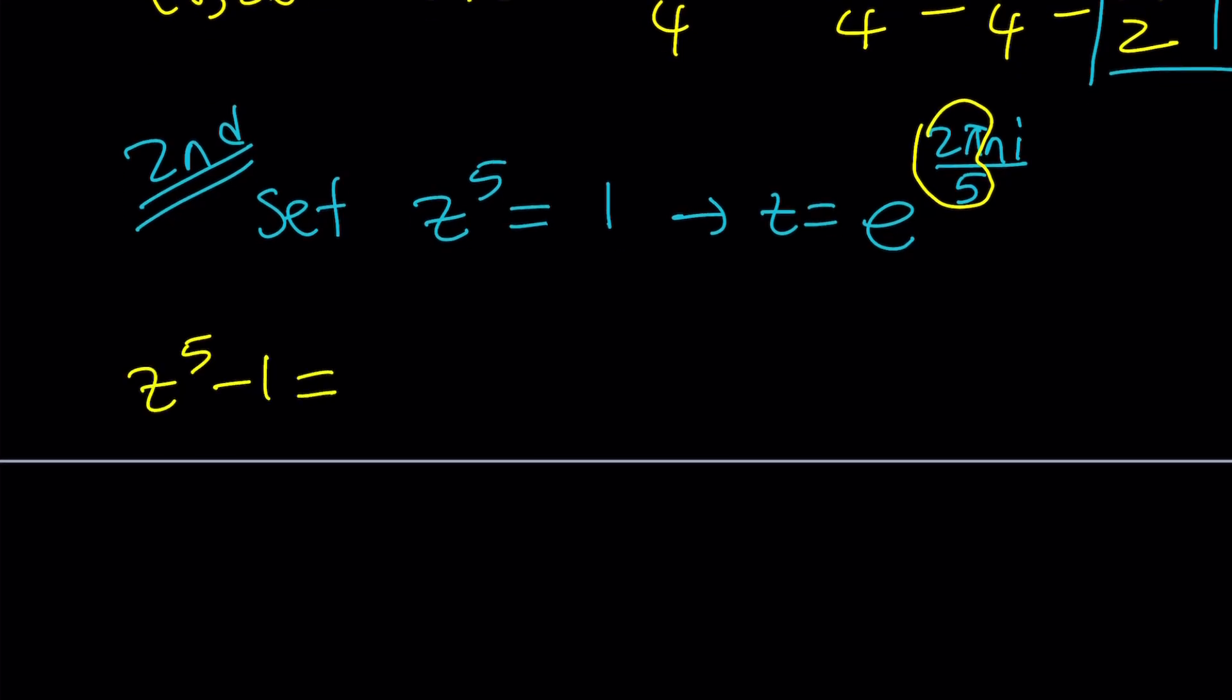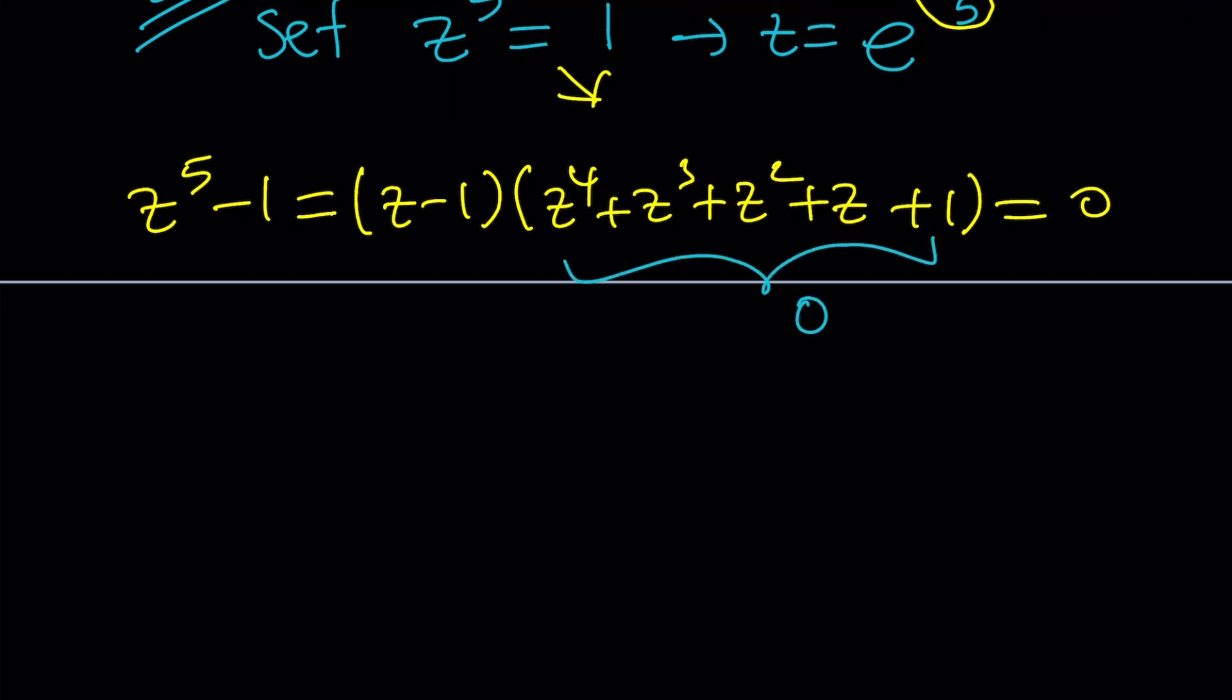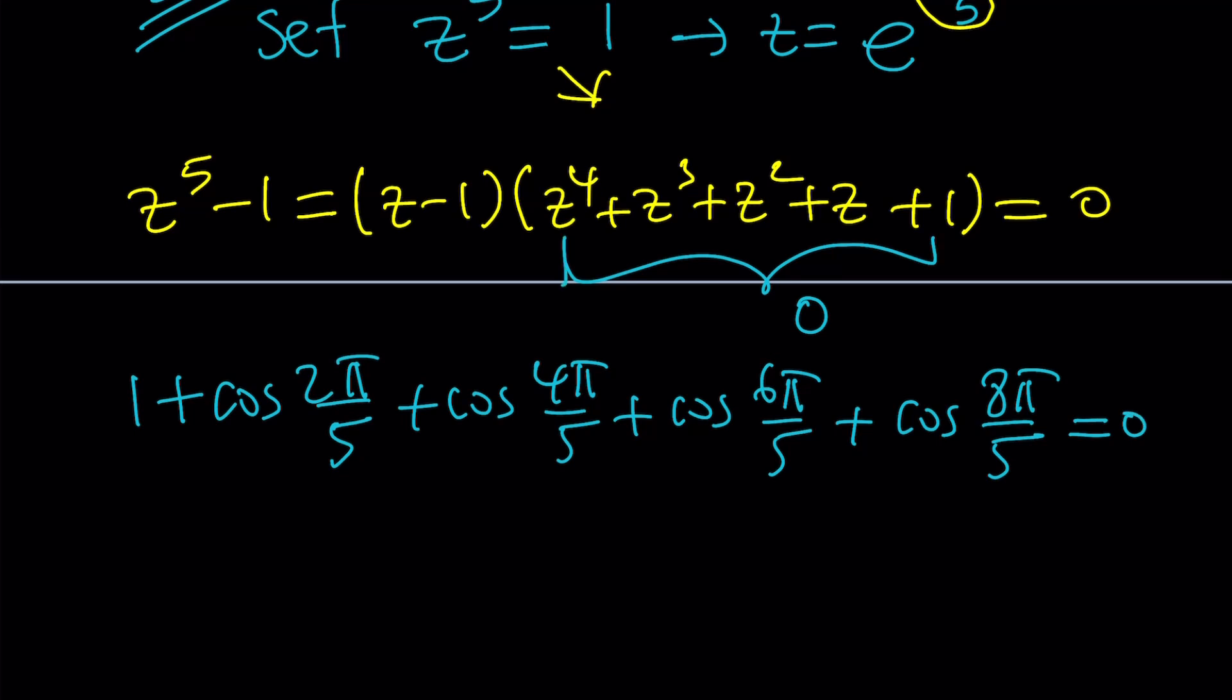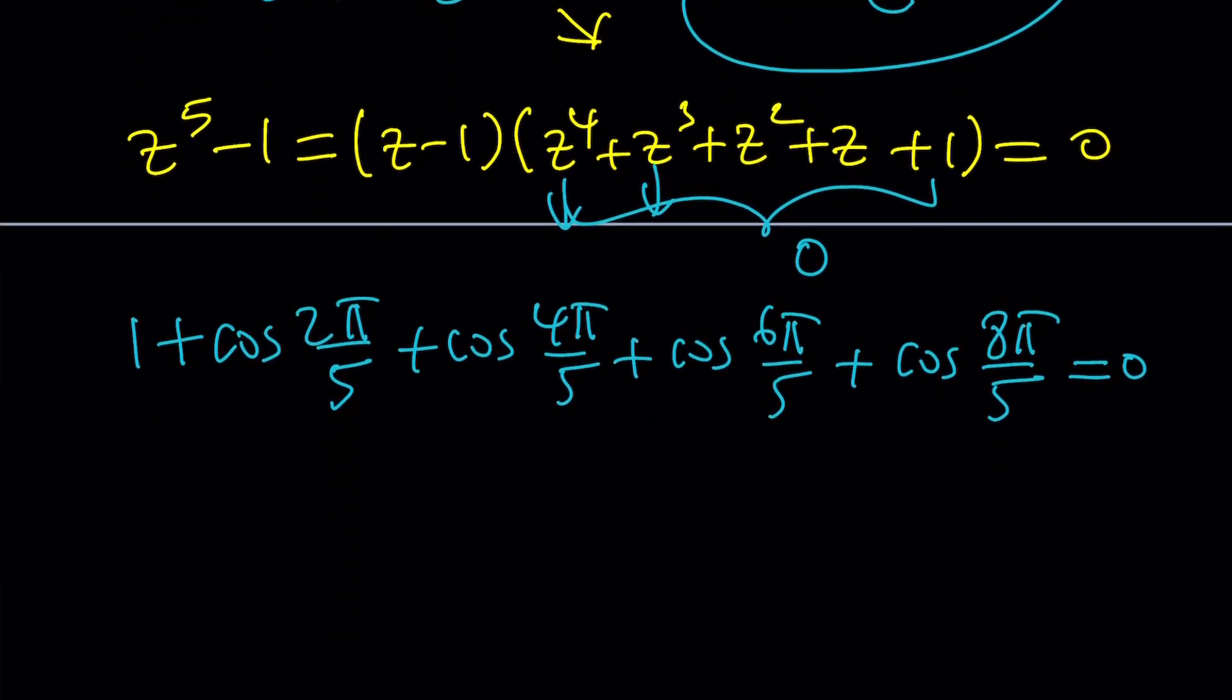Focus on how we can factor z to the fifth minus 1. It can be factored as (z - 1) times (z^4 + z^3 + z^2 + z + 1), and we set it equal to 0. If z does not equal 1, then z^4 + z^3 + z^2 + z + 1 = 0. This gives us an interesting idea: if you take the fifth roots of unity and add them all up, including 1, there's 5 of them, it's always going to be 0. If you add these numbers, but only the real parts, you get something that looks like this.